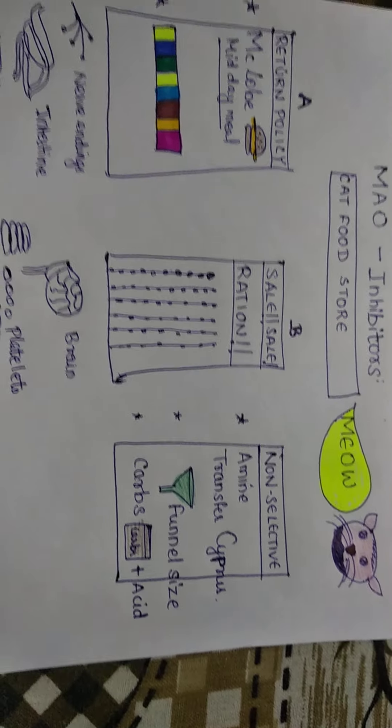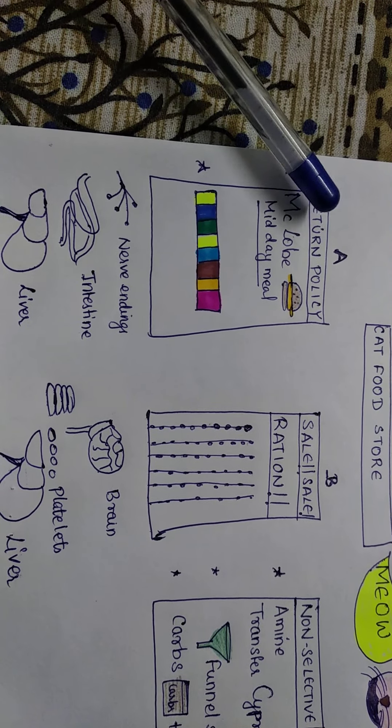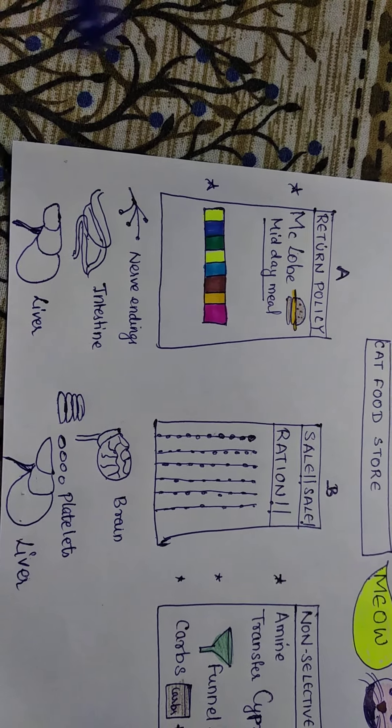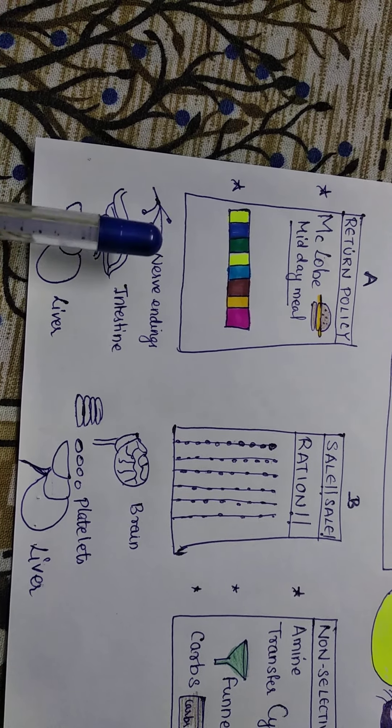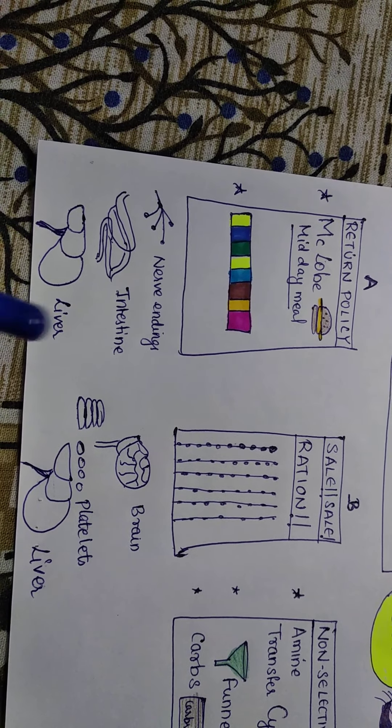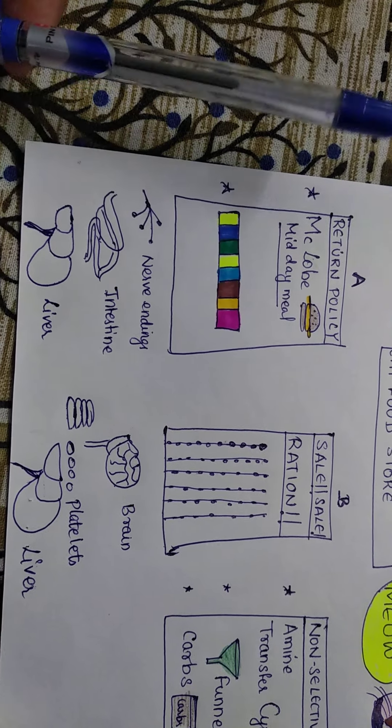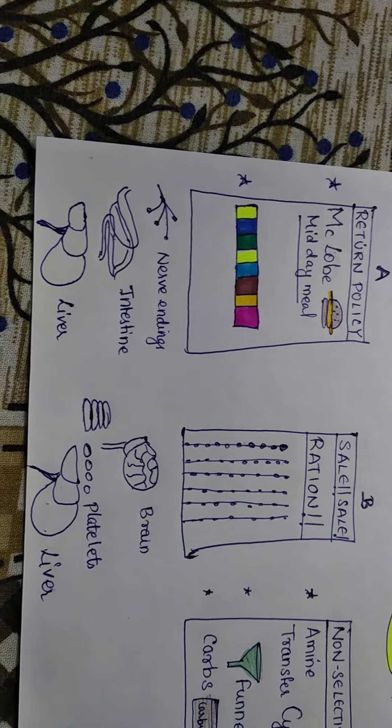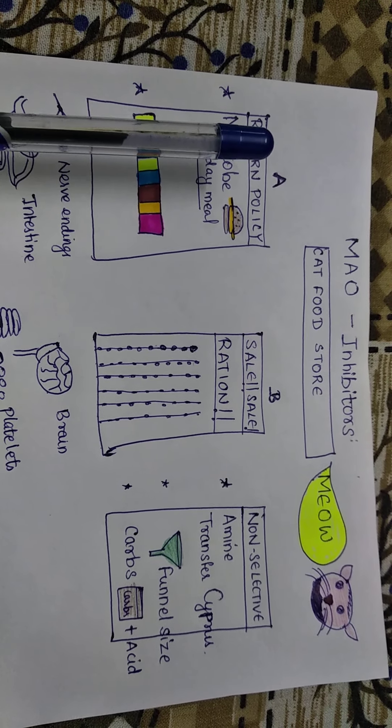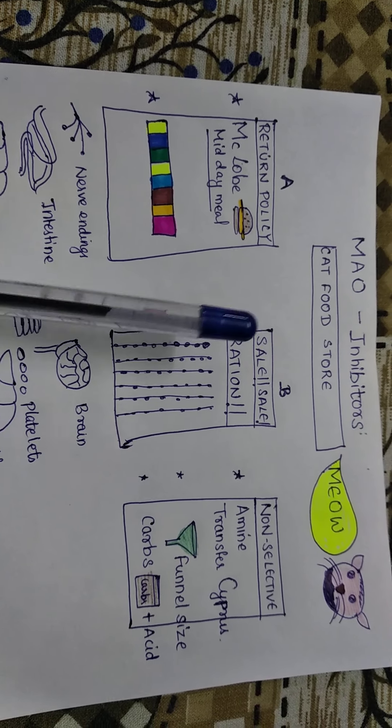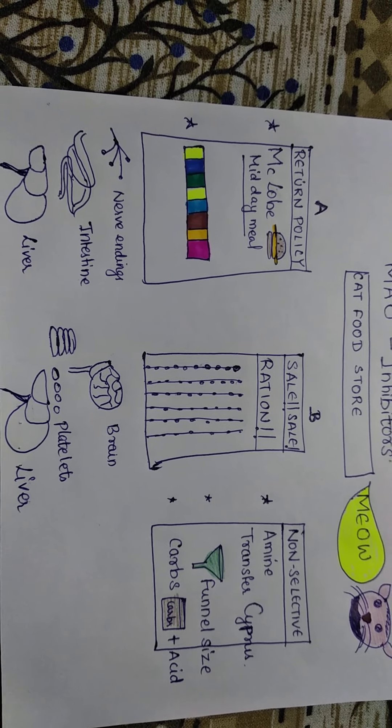Then another point to keep in mind is the food which is available under A, that is the monoamine oxidase A enzymes. They work on nerve endings, intestines, and liver. It means the monoamine oxidase A enzyme return policy is the reversible drug. This return policy means it is the reversible MAO-A inhibitors. B is MAO-B, and non-selective is the non-selective drugs.